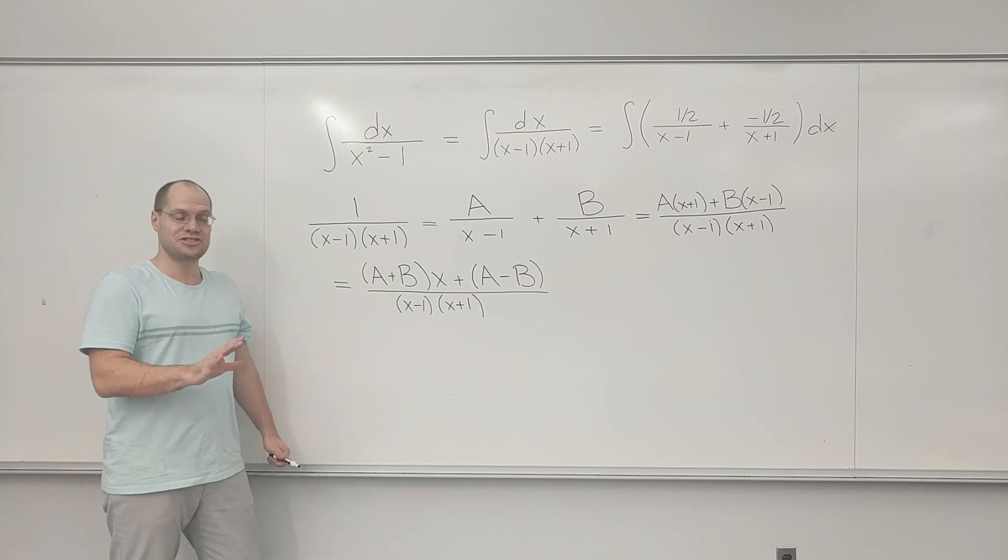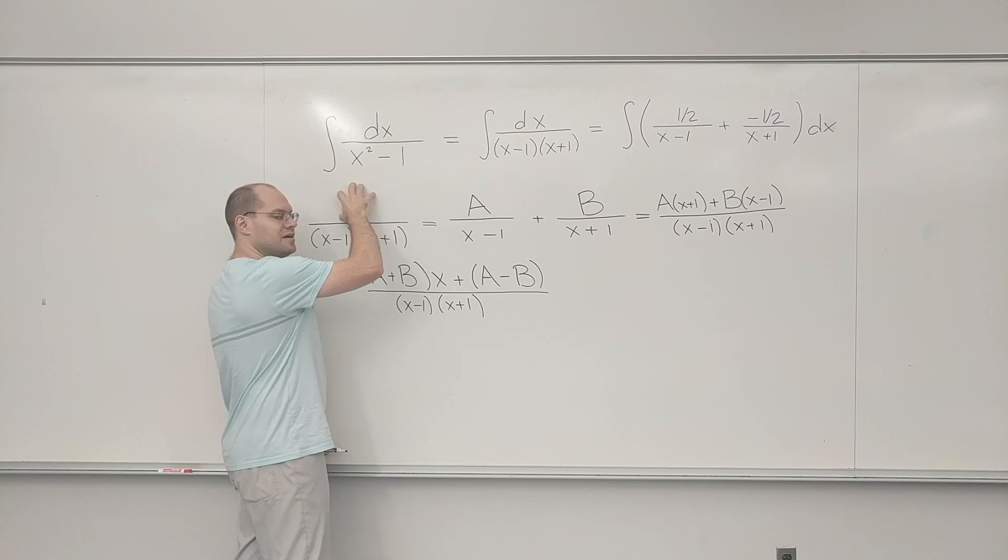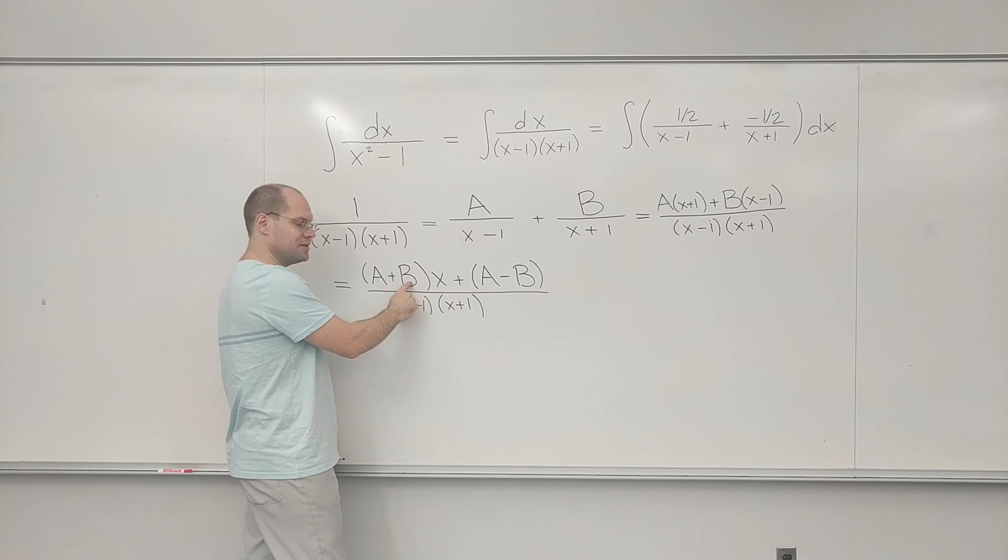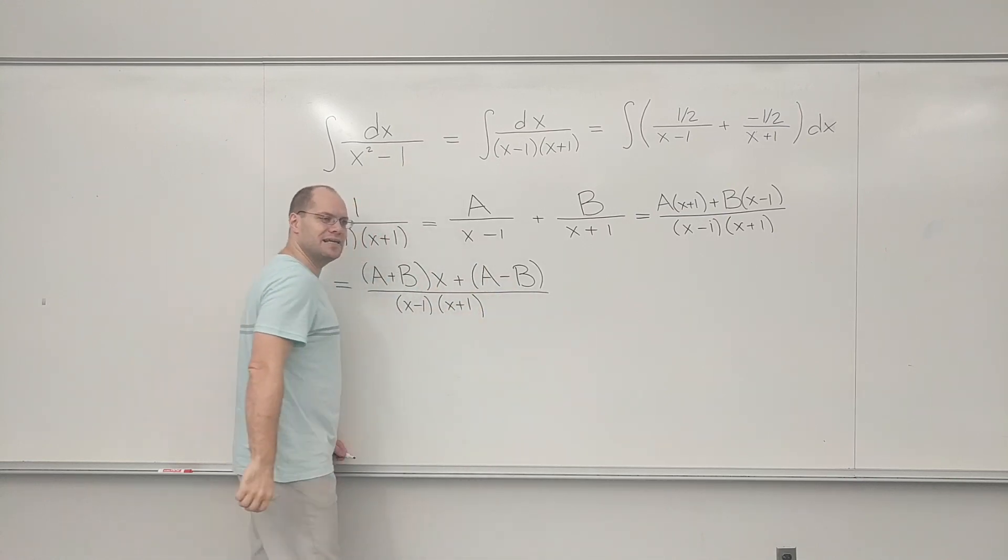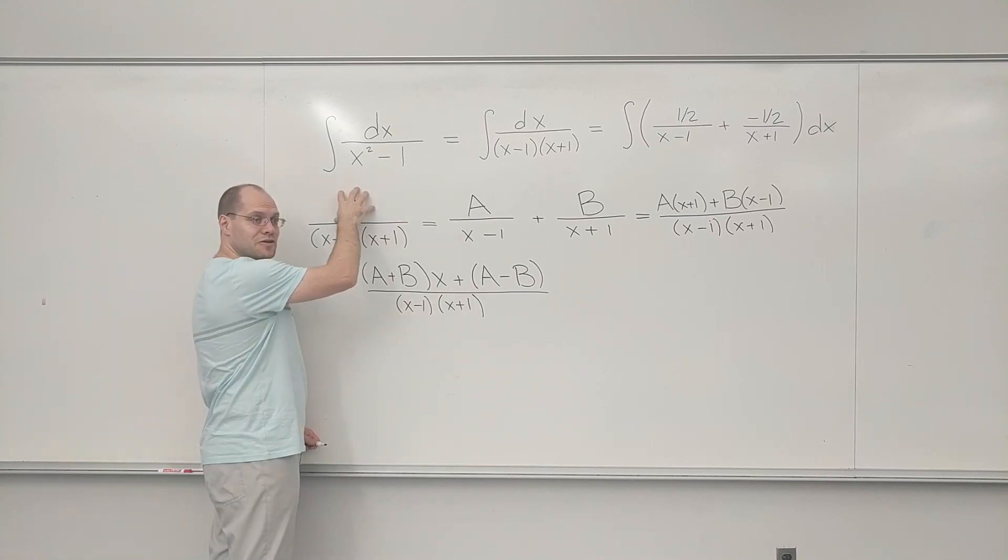And the constant term is a minus b because it's a from here and minus b from here. Now comes the matching step. We have to match up this with what we have here. Here we have a linear function where the linear coefficient is a plus b and the constant coefficient is a minus b.